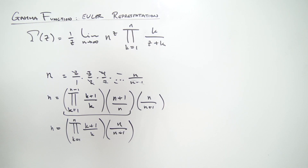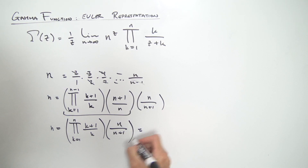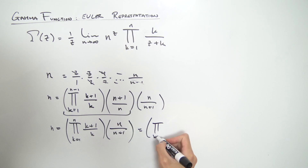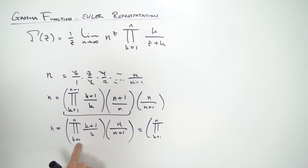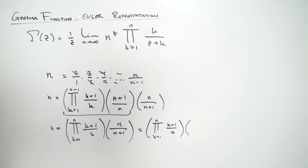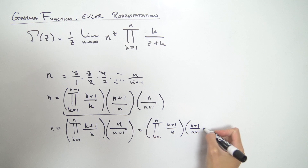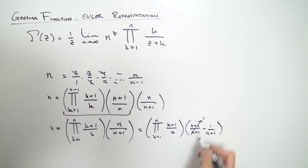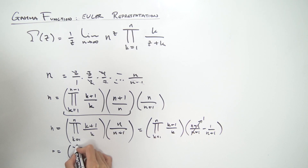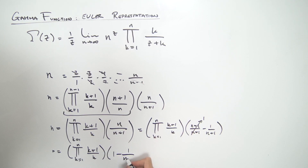Now we can manipulate n/(n+1) a little further. Notice that n = (n+1) − 1, so n/(n+1) = (n+1)/(n+1) − 1/(n+1) = 1 − 1/(n+1). So our overall expression for n is: the product from k=1 to n of (k+1)/k, times (1 − 1/(n+1)).